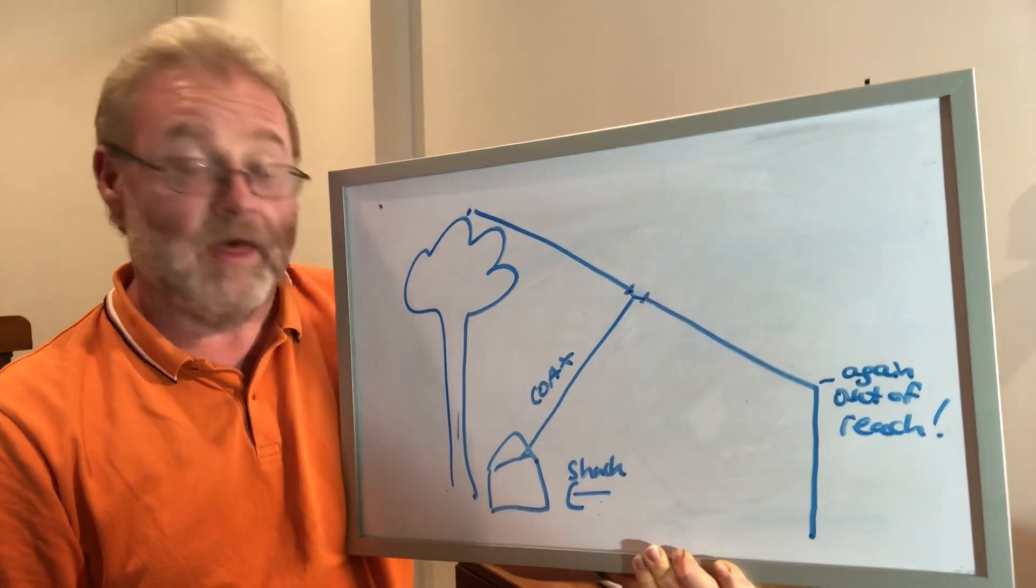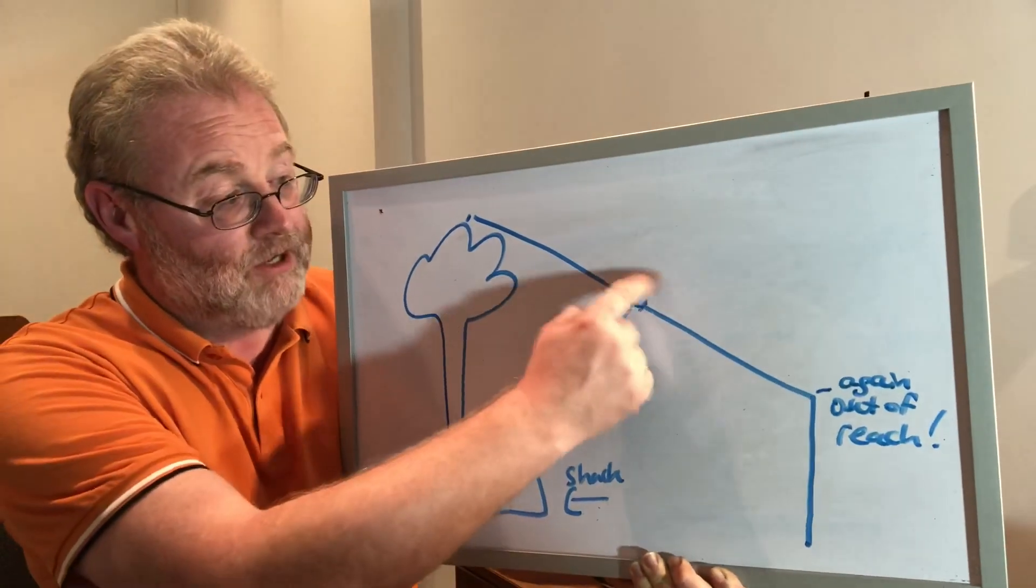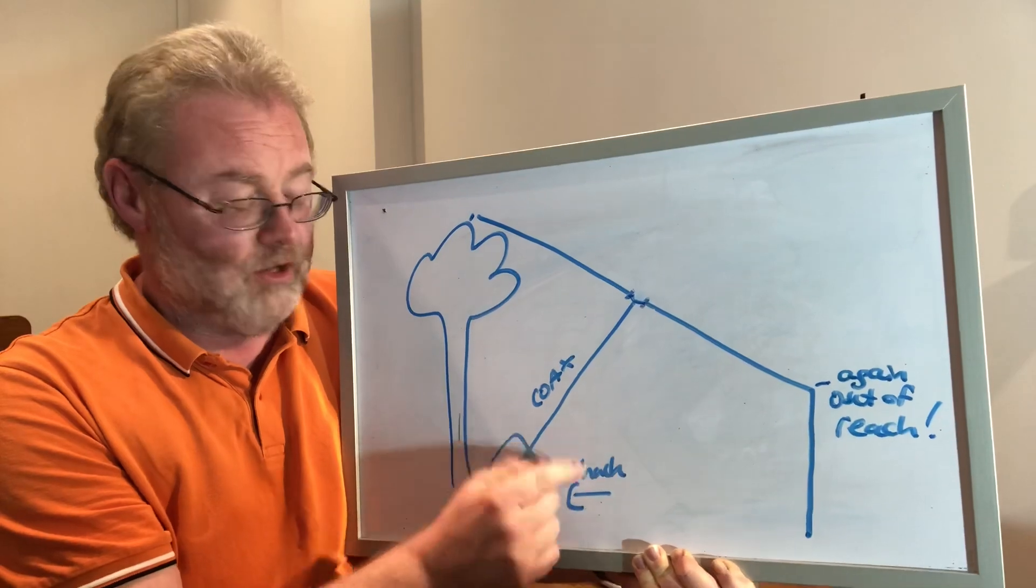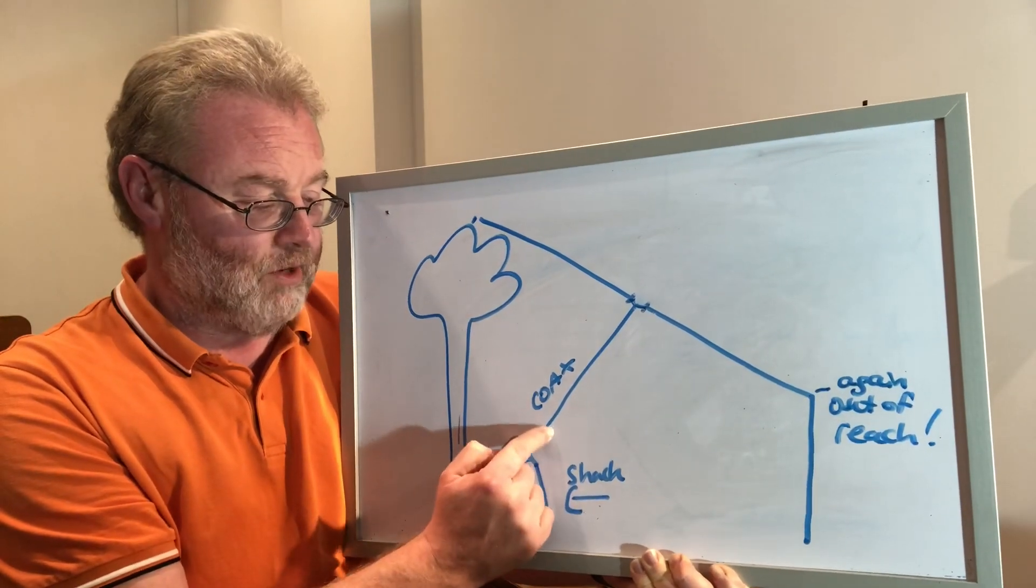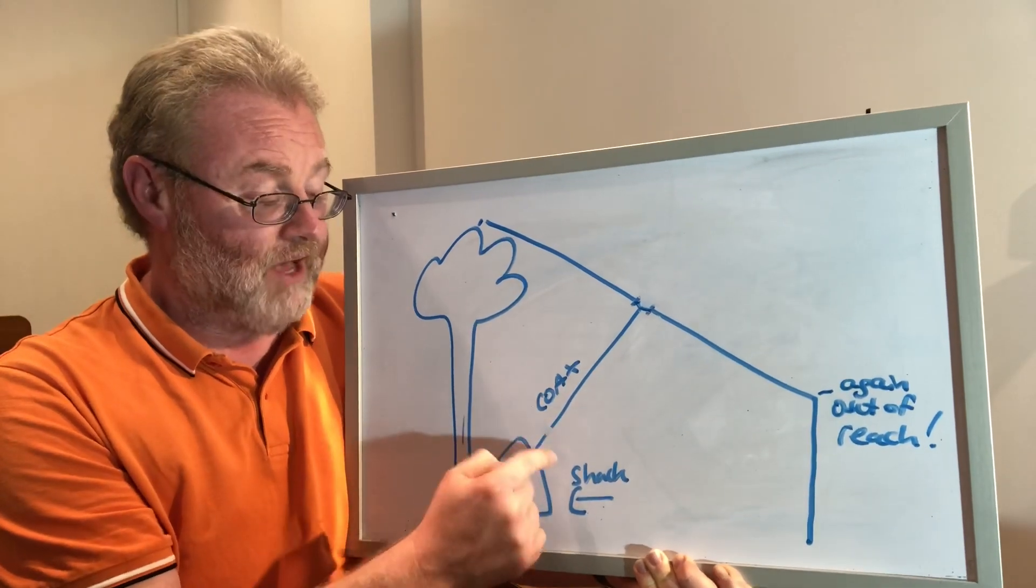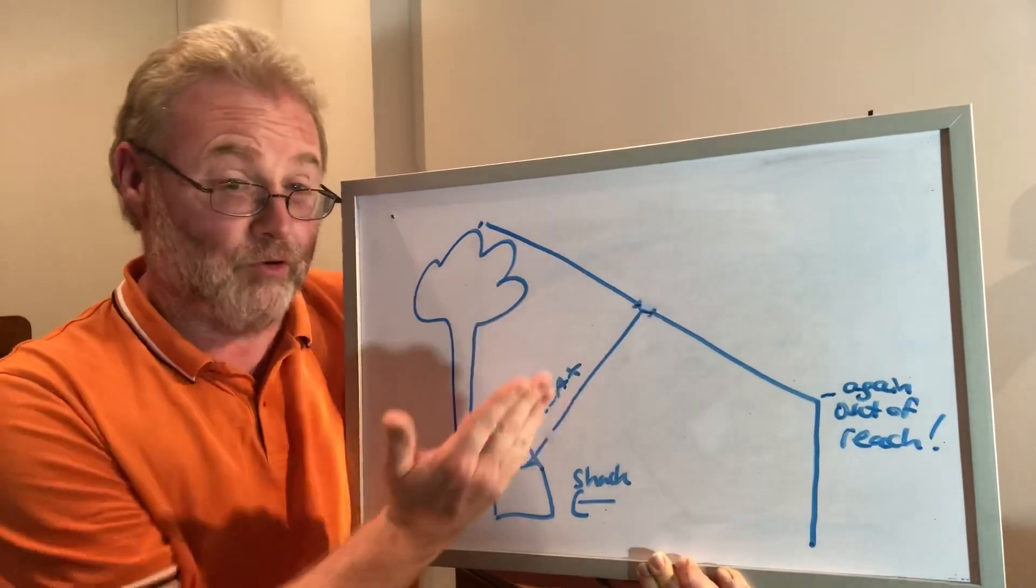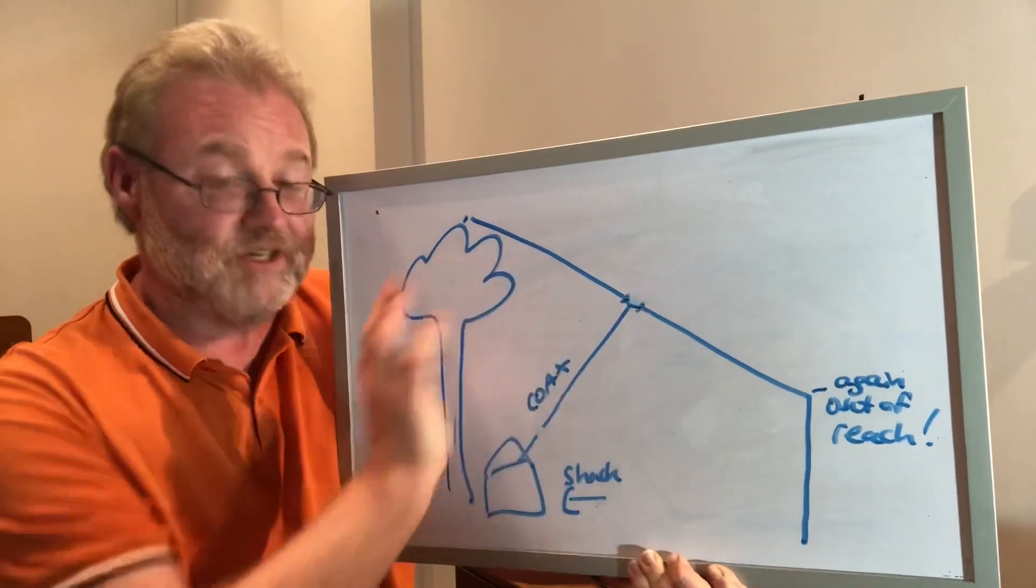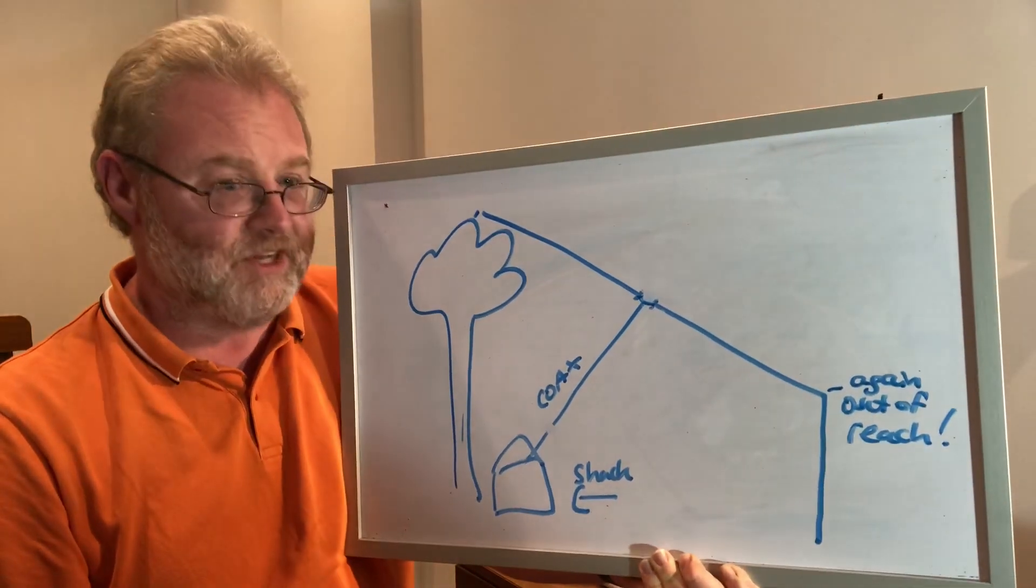Some people swear by them, some people say they're not needed. I'll let you decide that. Some people actually don't put a choke balun here to minimize the amount of weight on the feed line, but then maybe put a choke somewhere before the coax enters the shack. Although there will be RF in the feed line before it gets to your choke down here, it will alter the radiation pattern of the antenna a little bit, but you probably won't notice the difference.